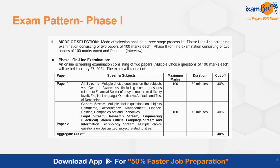Let's have a quick look at the exam pattern. In phase 1, you have two papers. Paper 1 is Quantitative Aptitude, Reasoning, English, and General Awareness. Paper 2 is your IT stream paper in which you will have 50 questions of 100 marks. In paper 1, you will have 80 questions.